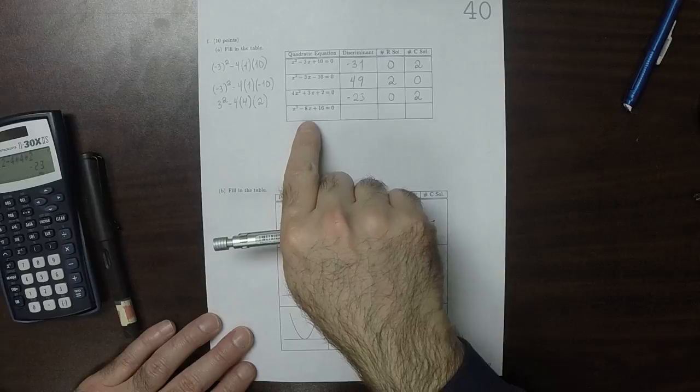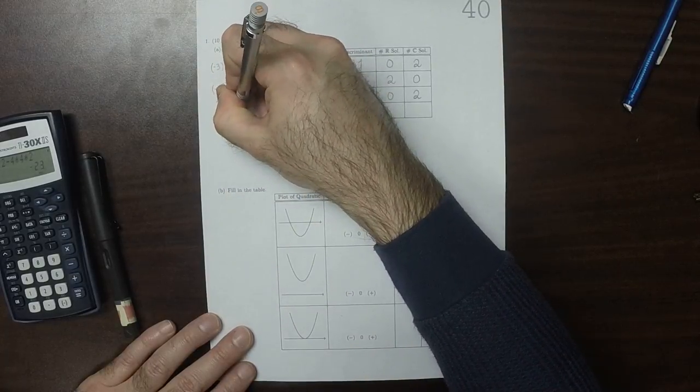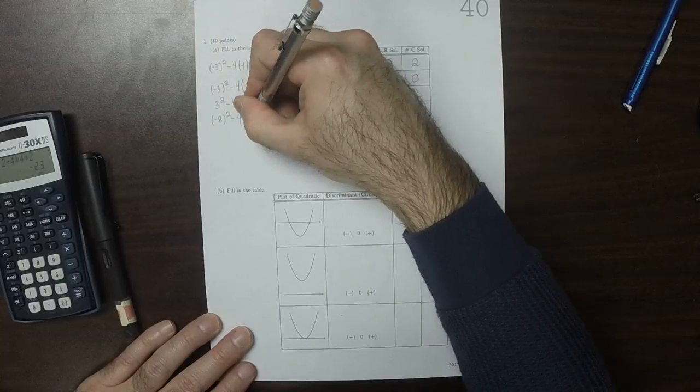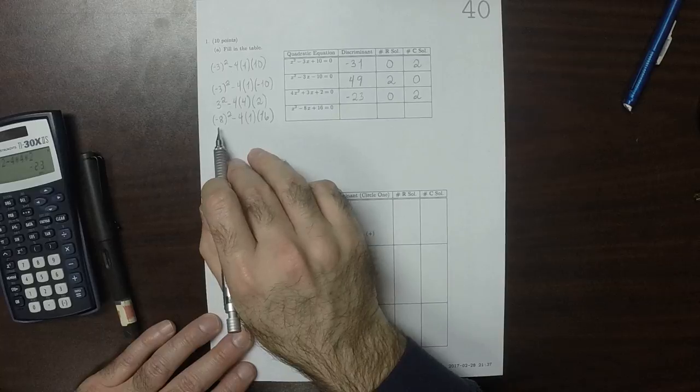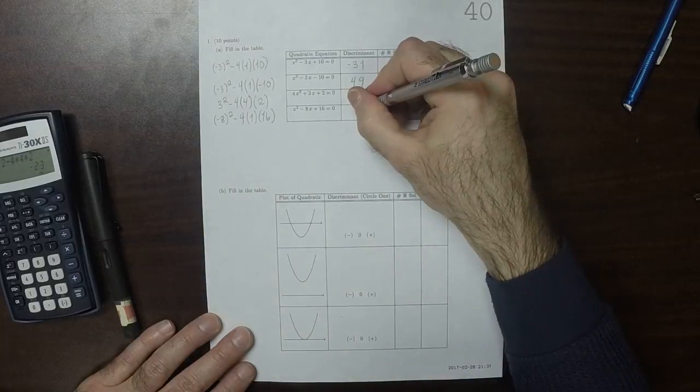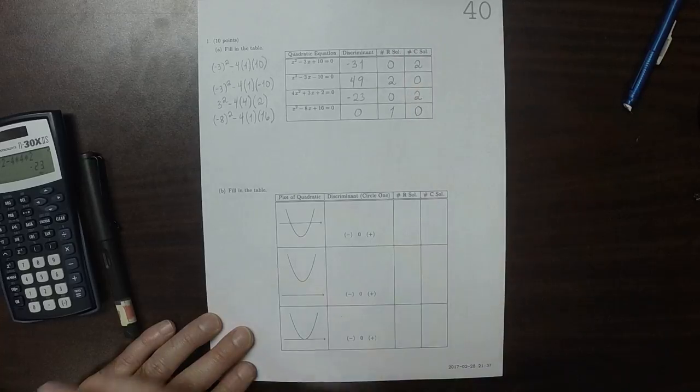And finally, negative 8 squared minus 4 times 1 times 16. Well, that's 64 minus 64, so that would be 0. So there's 1 real solution and 0 complex solutions.